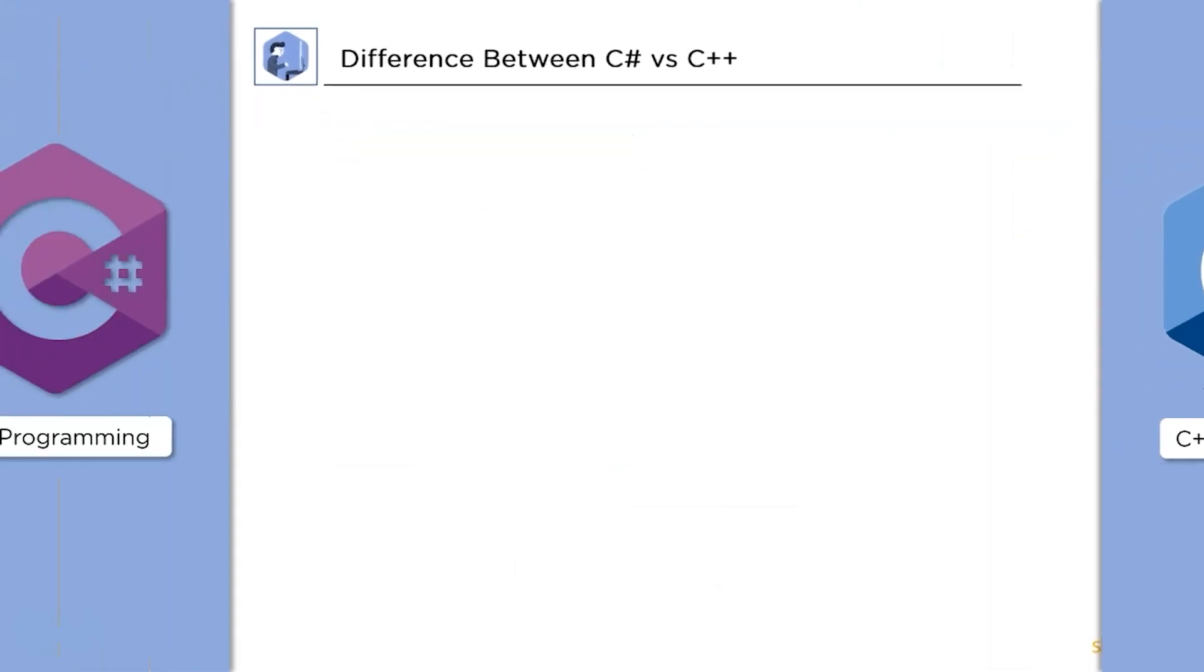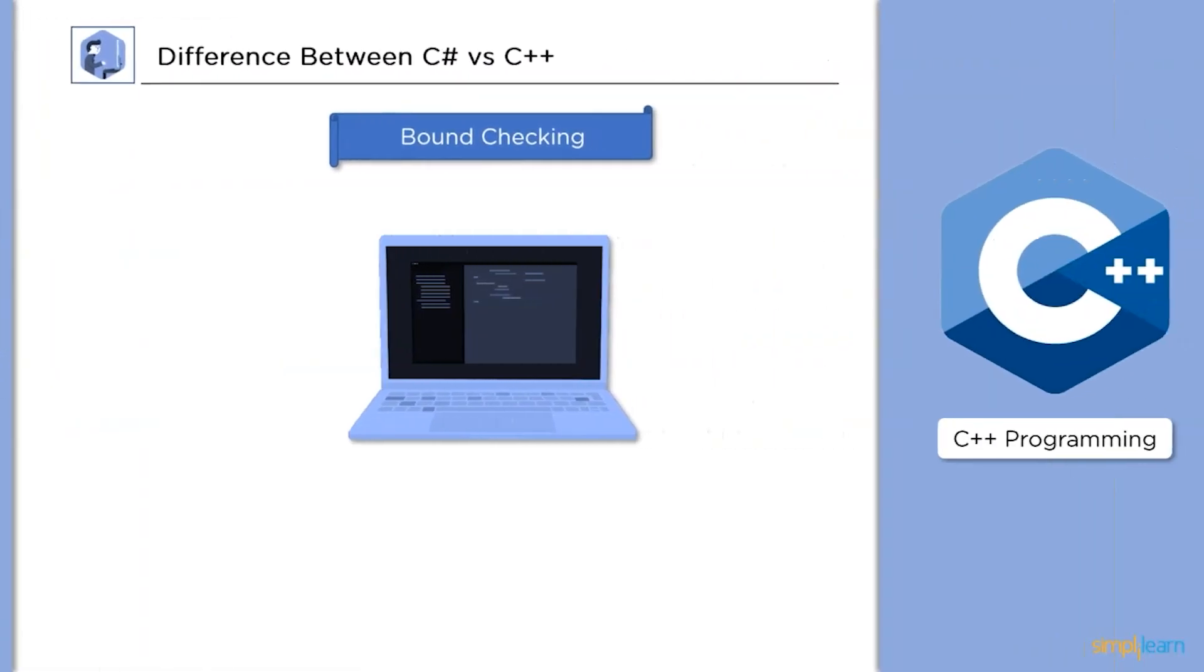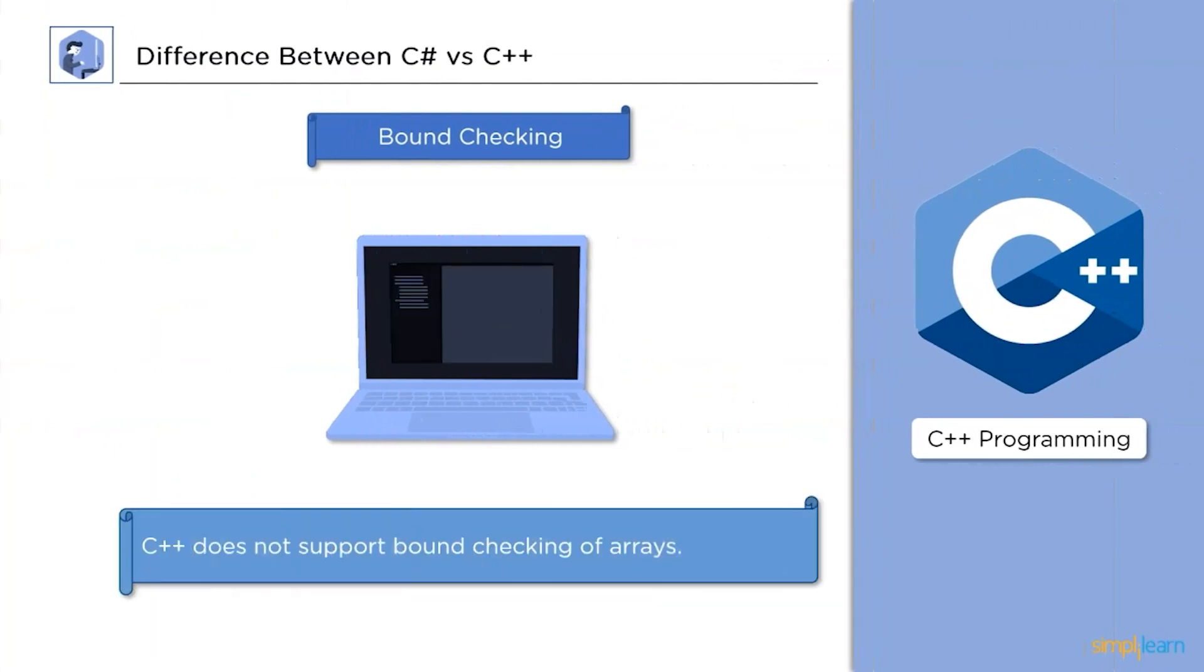Next up, bound checking. It's the compiler that does array bound checking in C Sharp. If the programmer attempts to access an invalid array index by accident, it will result in a compilation error. The compiler does not perform bound checking for C++. If a programmer accidentally attempts to access an invalid array index, the output will be incorrect, but no compiler fault will be shown.